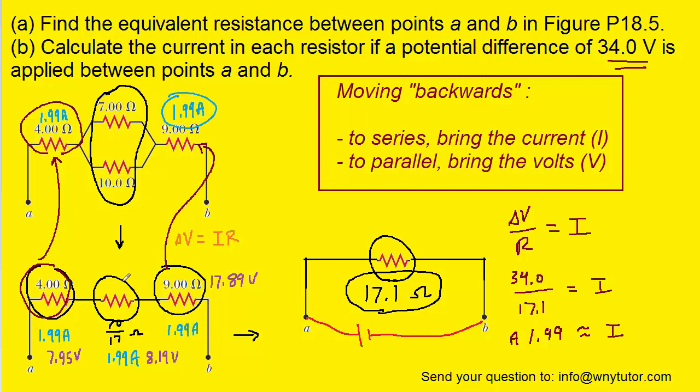But notice when we move backwards from the middle resistor to where it came from, it came from these two, which were in parallel. Well, we look at our rules, and if we move backwards to parallel, we don't bring the current, we bring the volts. So we're going to take the 8.19 volts that we had found earlier, and apply that to both this 10 Ohm resistor and the 7 Ohm resistor.